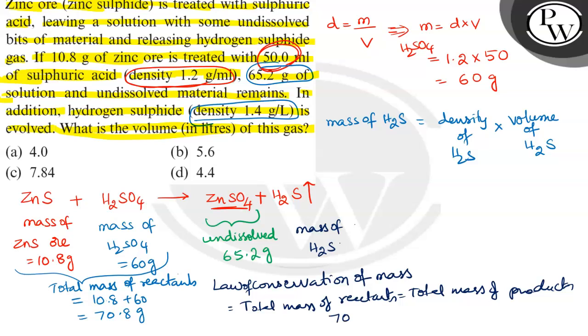70.8 minus 65.2 grams, so automatically mass of H2S is equal to 5.6 grams.